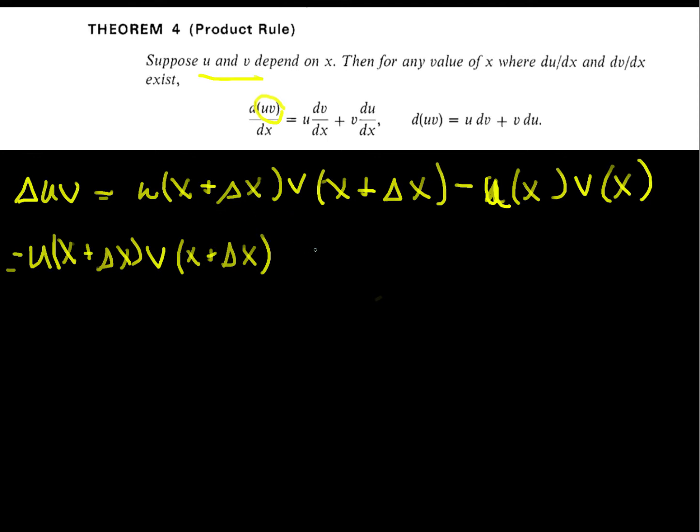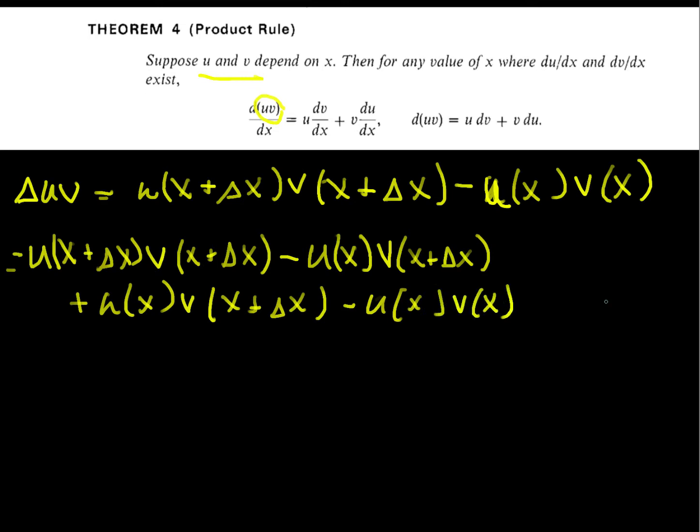And then I'm going to subtract u of x v of x plus delta x, and immediately add it. And then we still have this term minus u of x v of x. At first blush, I may be wondering why would I do that? Well, again, by subtracting and adding, I've just included a zero.